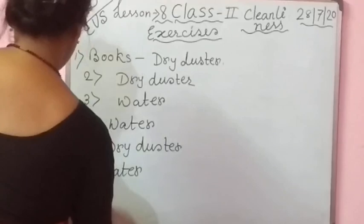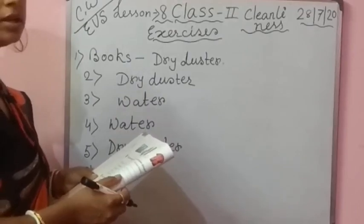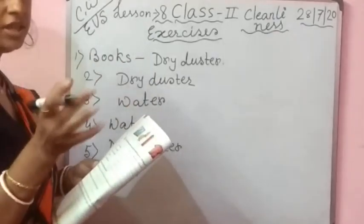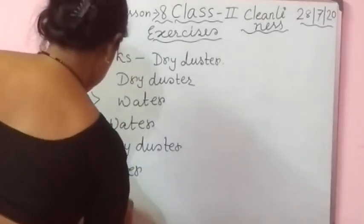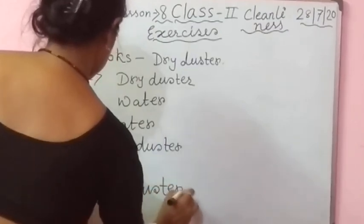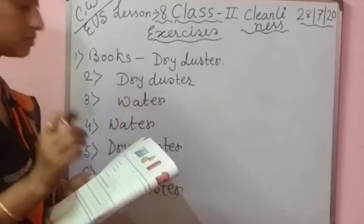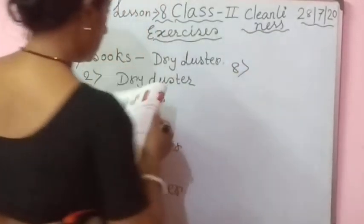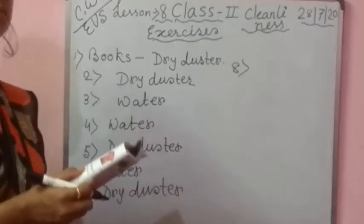Number seven: fridge, refrigerator. On the outside, clean with dry dust; inside, clean with water. Number eight: clothes. Clothes are cleaned with water.